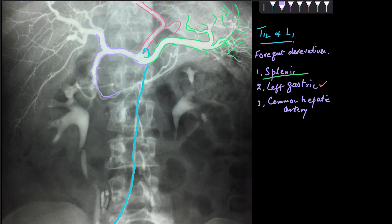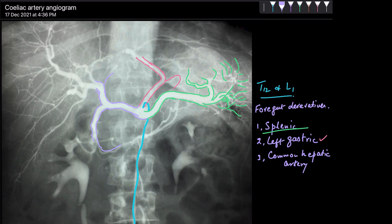The hepatic artery proper ascends up, gives the right gastric artery, and after that it divides into the left and right hepatic arteries. You can see these right and left hepatic arteries branching off — they carry arterial blood to my liver. Around 20 to 25 percent of the blood which reaches the liver is delivered via this hepatic artery proper, and you can see its multiple branches widely distributed within the right and left lobes of the liver.